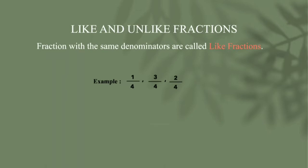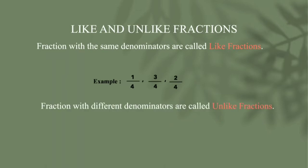Now see unlike fractions. Fractions with different denominators are called unlike fractions. For example: 15 by 12, 15 by 9, 11 by 4. All these fractions have different denominators. So this type of fraction is called unlike fractions.